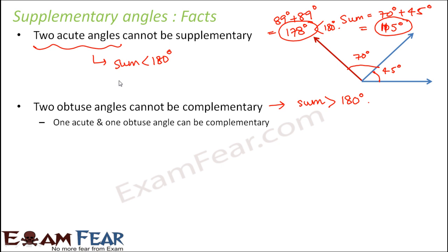Neither two acute angles nor two obtuse angles can be supplementary. However, one acute and one obtuse angle can definitely be supplementary. If you take one acute angle and one obtuse angle, that can be a perfect supplementary pair.